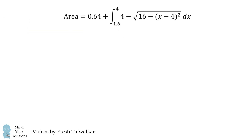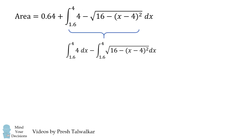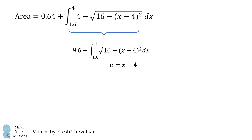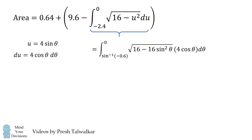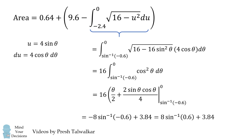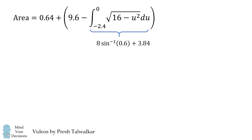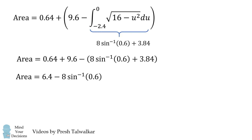So how do we solve the rest of this equation? Let's focus on this integral. We'll split it up into two different integrals. The first integral is trivial to calculate. The second integral we will ultimately solve using a trigonometric substitution. Let's write u equals x minus 4, so the integral becomes the following. We say u equals 4 multiplied by the sine of theta, so du equals 4 times the cosine of theta dθ. We substitute this in and change the limits of integration. This simplifies to be 8 times the inverse sine of 0.6 plus 3.84. Finally, we substitute this in and simplify so that the area equals 6.4 minus 8 times the inverse sine of 0.6, which is also approximately equal to 1.252.